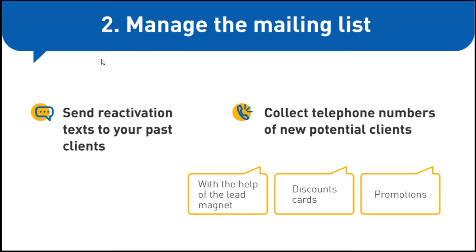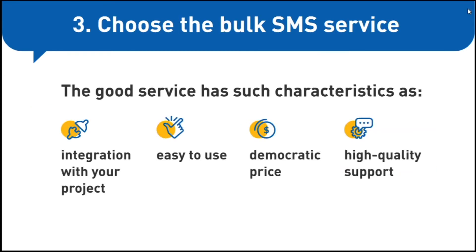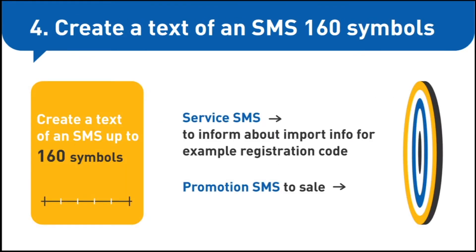But there is also another method. Our program, Atomic Lead Extractor, will find telephone numbers of your target audience on the web within a couple of hours. So let's imagine you already have a contact base — what to do next? Choose a bulk SMS service. The perfect one has characteristics such as integration with your project, ease of use, democratic pricing, and high quality support.